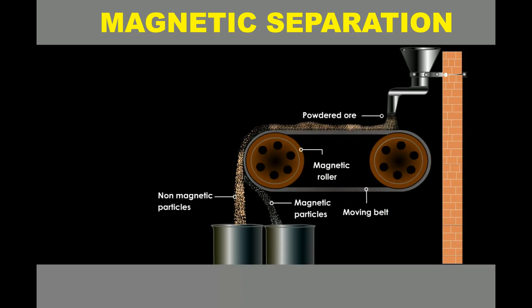Thus, the ore and gangue particles get separated into different heaps away from each other.